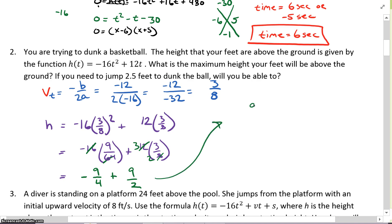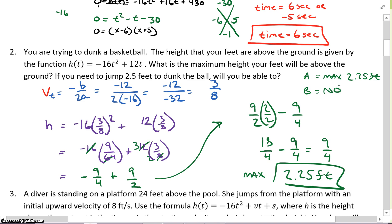So I get 9/2 - 9/4. I'm going to multiply this by 2/2 to get my fraction. So I get 18/4 - 9/4, which equals 9/4, which is 2.25 feet. That's the maximum height. Can I jump 2.5 feet to dunk the ball? Part A, the max is 2.25. If that's the max I can jump, part B, no. You cannot make the dunk because you need to go at least 2.5 feet.